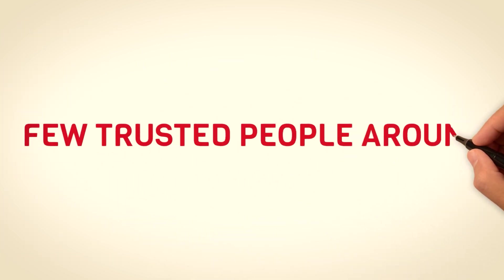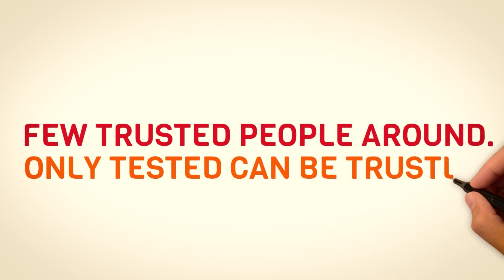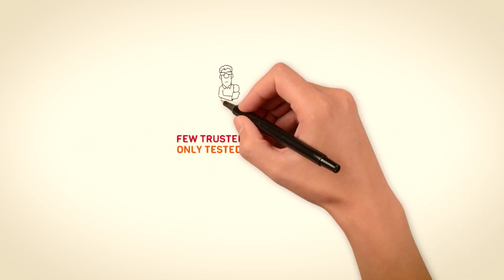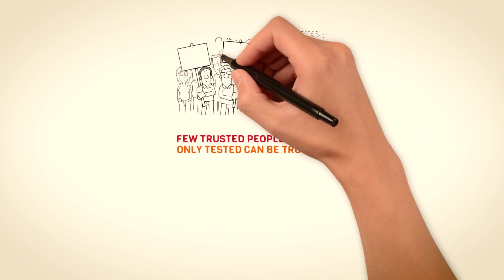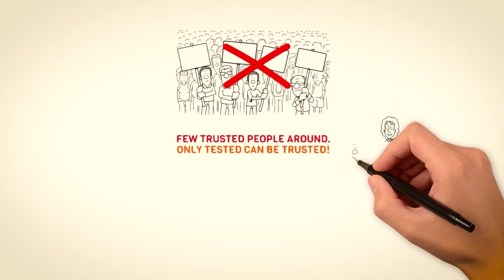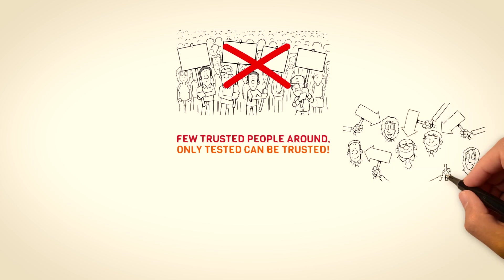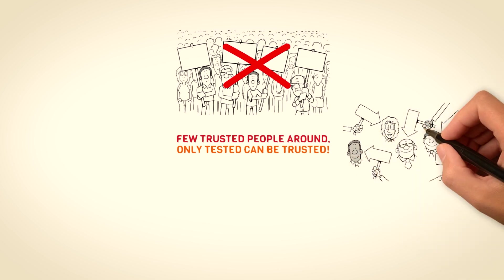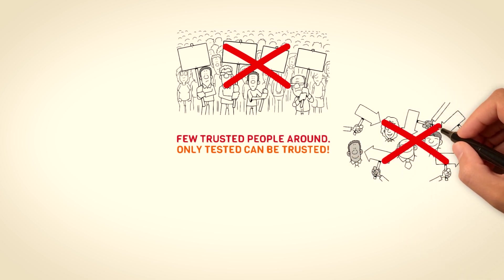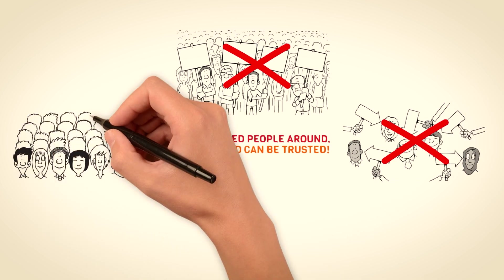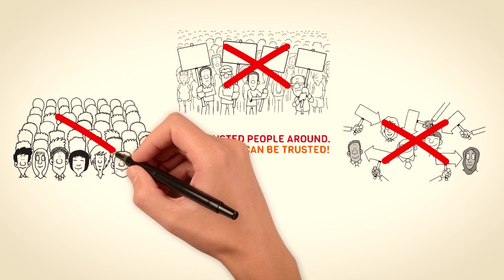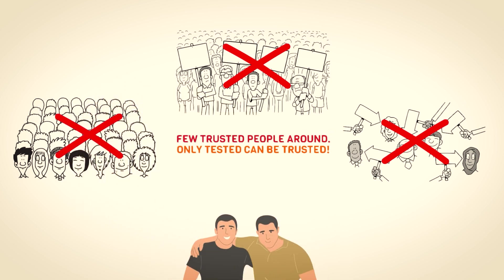They have a small circle of trust. Sigma males tend to be more introverted and find solace in spending time alone. This need for solitude can make it challenging for them to form and maintain a large circle of trust. They are often content being in their own company, indulging in introspection, and pursuing their passions on an individual level. This desire for solitude can limit the amount of time sigma males dedicate to building and nourishing relationships.